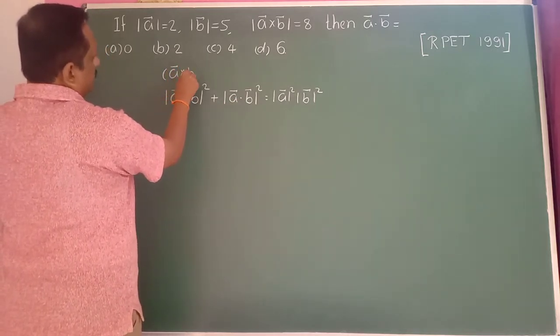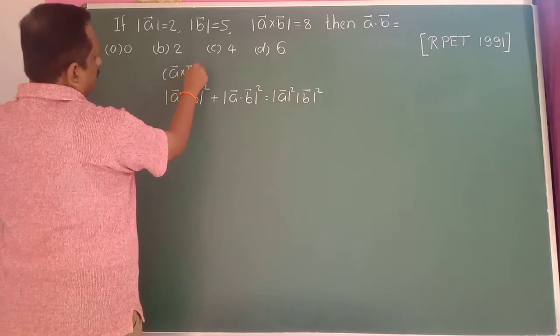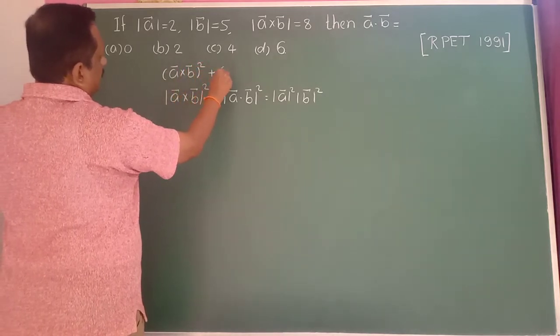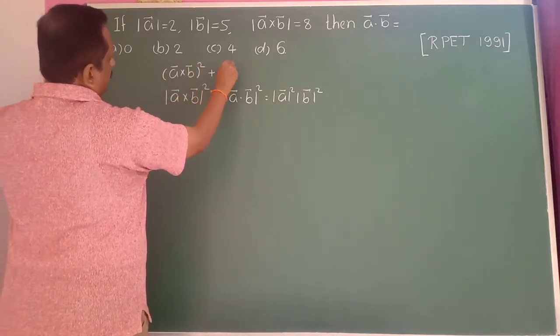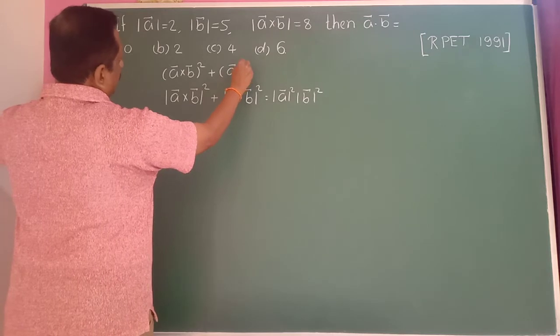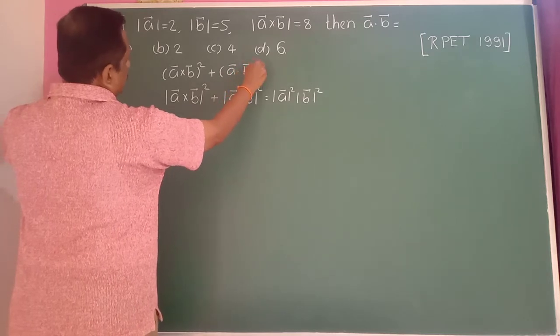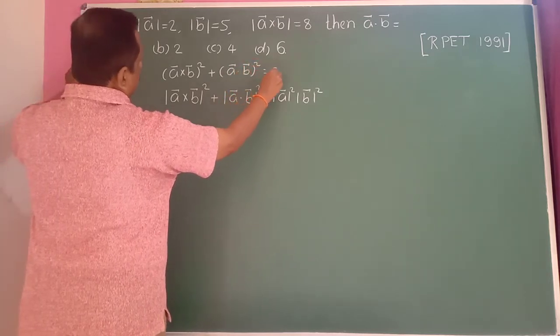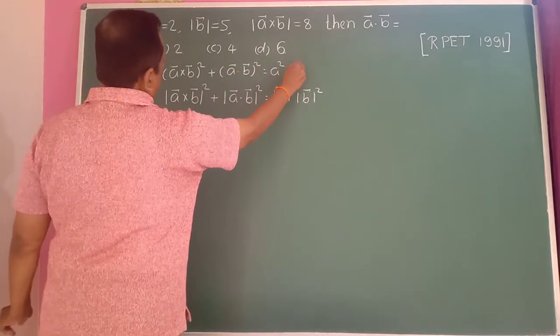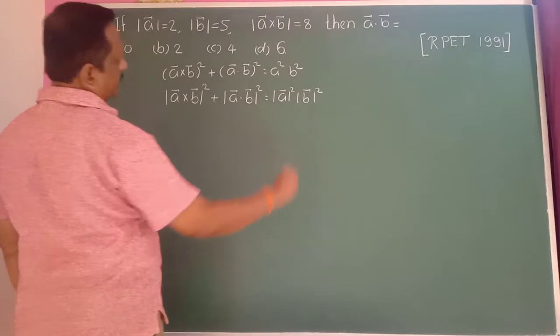So the formula is: |a×b|² + |a·b|² = |a|²·|b|². This is an important formula. Sometimes the same formula is written as a-bar cross b-bar whole square plus a-bar dot b-bar whole square equals a square into b square.